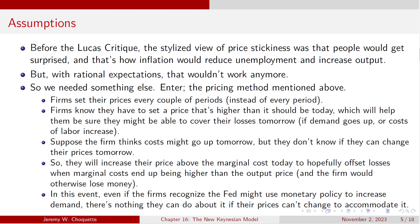So we needed something else in order to get price stickiness to work. What happens is firms set their price every couple of periods instead of every period. In the real business cycle model they set their price every period; now they do it every few periods — maybe every 3, 4, or 10 periods. Firms know they've got to set a price that's higher than what it should be today, which helps them cover losses tomorrow. If demand goes up tomorrow or costs of labor increase, they've got to make sure they can cover that. You might make a little bit more than marginal cost today, and tomorrow make a little bit less, and over the two periods it'll average out to zero.